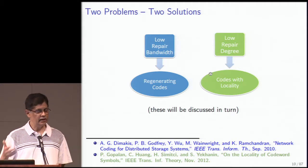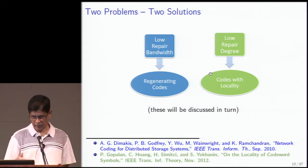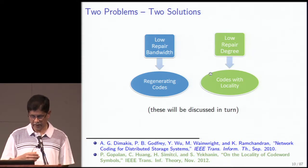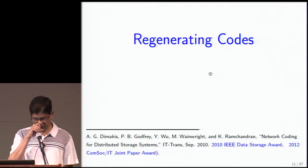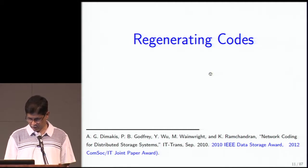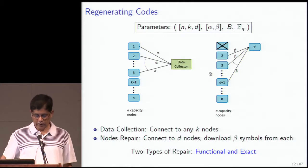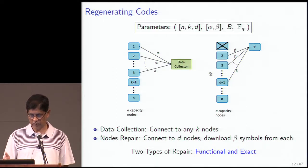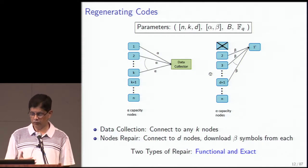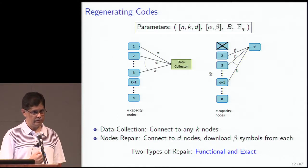The top solution is from the Berkeley team and the bottom from Microsoft. Regenerating codes — this paper has been well recognized, justly so. To go over what exactly a regenerating code is: there are a bunch of parameters. n is the total number of nodes in the system, and each node stores α symbols. Right away there's a difference from a traditional block code: each code symbol is a vector of α smaller symbols drawn from a finite field F_q.